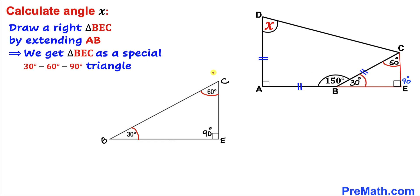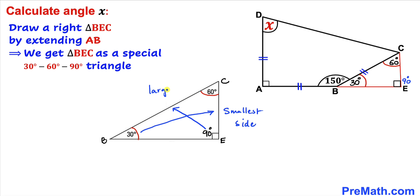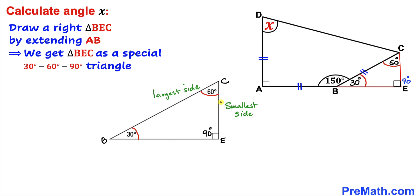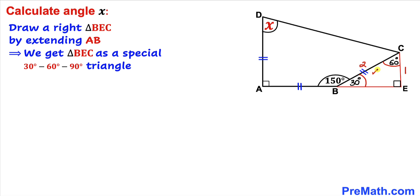So triangle BEC is a special 30-60-90 degree triangle. In this special triangle, the 30-degree angle is opposite the smallest side, and the 90-degree angle is opposite the largest side. In a 30-60-90 triangle the largest side is twice the smallest side. So if we represent EC as 1 unit, then BC equals 2 units.